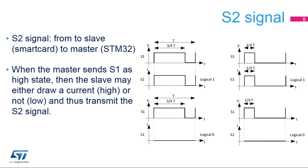A duty cycle of 75% on S1 codes a logical 1. The S1 signal frequency determines the transmission clock. The S2 signal is transmitted by the slave, the smart card, to the master, the STM32. The slave draws a current while S1 is high to send a logical 1. If the slave does not draw any current while S1 is high, it is a logical 0.